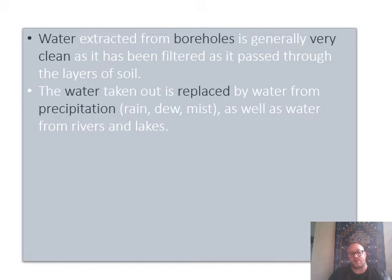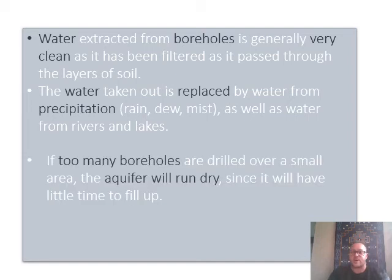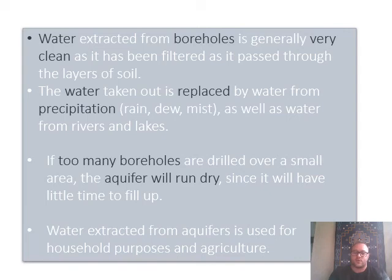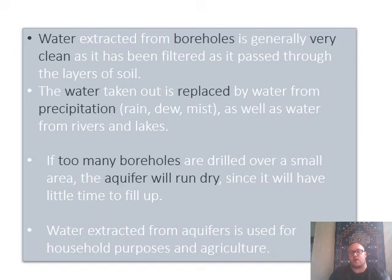The water taken out is replaced by water from precipitation - rain, dew, and mist - as well as water from rivers and lakes. If too many boreholes are drilled over a small area, the aquifer will run dry since it will have very little time to fill up. Water extracted from the aquifer is used for household purposes and agriculture. Many farmers invest in a borehole rather than an irrigation system because it's cheaper - you pay a nominal amount for access to water rather than buying water directly from the government, and borehole water actually tastes a lot better than tap water.